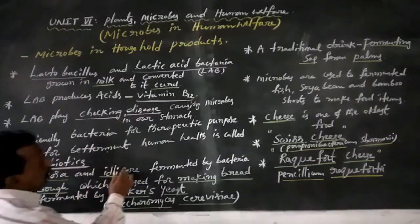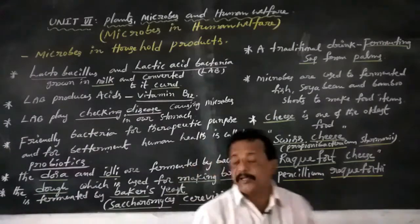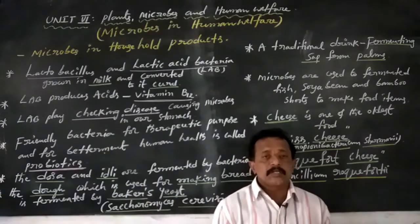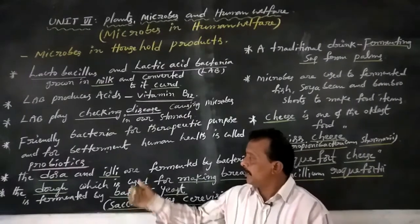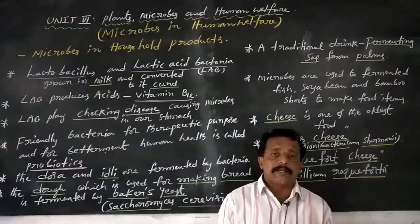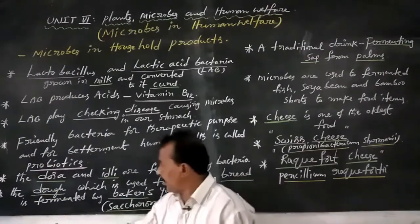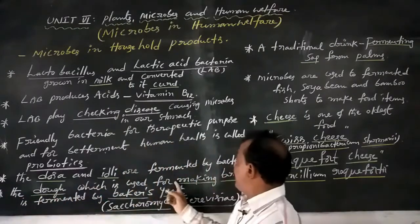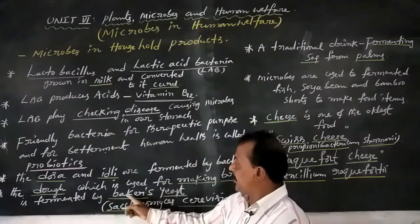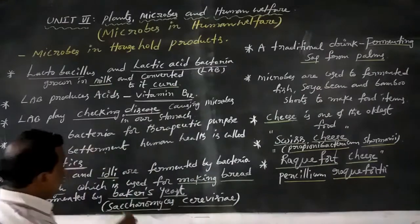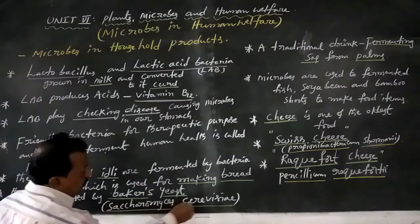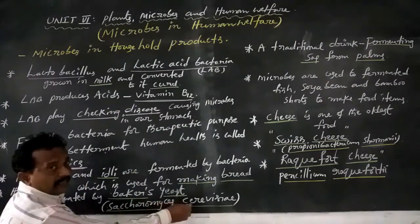Dosa batter and idli batter are fermented by bacteria. Also, the dough used for making bread is fermented by one type of yeast. That yeast is baker's yeast, with the scientific name Saccharomyces cerevisiae.